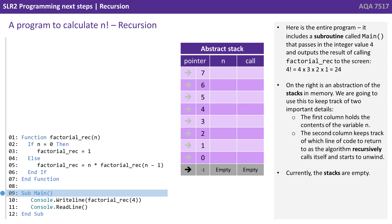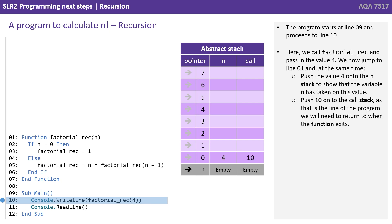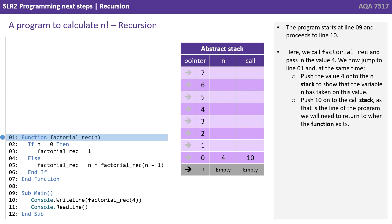Here's the entire program. It includes a subroutine called main that passes in the integer value 4 and should eventually output the result of calling factorial_rec — so that's 4 factorial: 4 times 3 times 2 times 1, which should output 24. On the right is an abstraction of the stack in memory. The first column holds the content of the variable n; the second column keeps track of which line to return to as the algorithm recursively calls itself and unwinds. Currently the stacks are empty. The program starts at line 9, proceeds to line 10, calls factorial_rec passing the value 4, jumps to line 1, pushes 4 onto the n stack, and pushes 10 onto the call stack as the line to return to when the function exits.